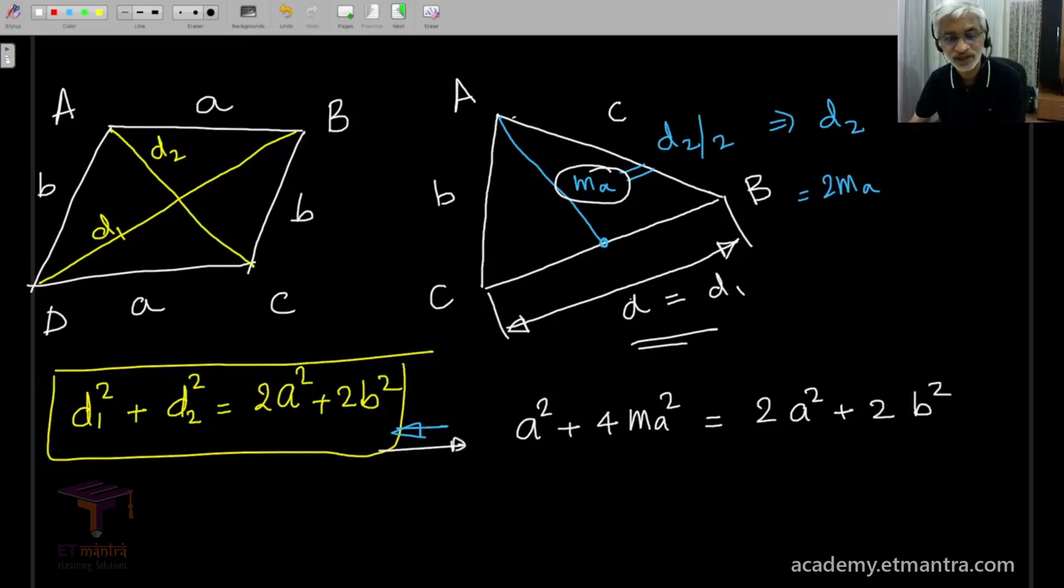So I have used this formula and this gives me 4mₐ² is equal to 2A² + 2B² - A². Now, this is a nice algebraic formula which gives you the length of the median.